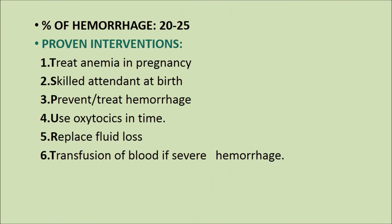Hemorrhage accounts for 20 to 25 percent of cases. Proven interventions include treating anemia in pregnancy, having a skilled attendant at birth, preventing and treating hemorrhage, use of oxytocin in time, replacing fluid loss, and transfusion of blood if severe hemorrhage is present.